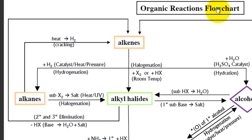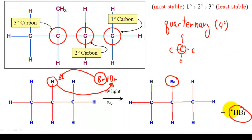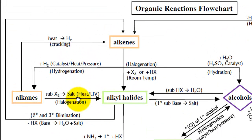Looking back at the organic reactions flowchart, alkanes can be converted into alkyl halides by substituting an X2, representing any halogen. In the process, you produce a salt — defined here as any hydrogen halide, so HBr is technically a salt. Heat or UV radiation is required to get this reaction going, and this reaction is called halogenation.